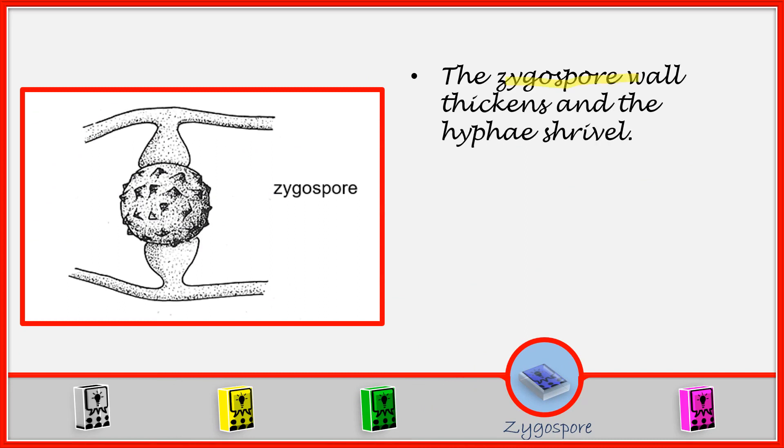The zygospore wall thickens and the hyphae shrivel. So here we have our zygospore. It is thickening. You can see that it is thickening. But the hyphae, when you look at the hyphae, they are shriveling. They are reducing in size, but the zygospore is thickening.